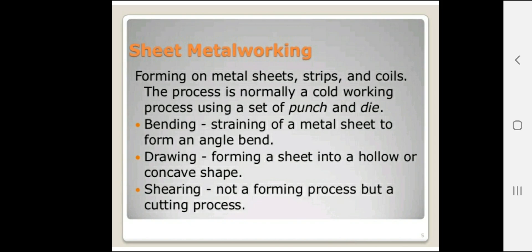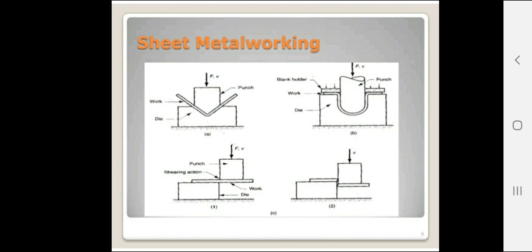The second part is sheet metal working. In this subject we study forming on metal sheets, strips, and coils. The process is normally a cold working process using a set of punch and die. Operations include bending, drawing, and shearing — classified as cutting and non-cutting operations. Bending strains a metal sheet to form an angled bend; drawing forms a sheet into a hollow or concave shape; and shearing is a cutting process.